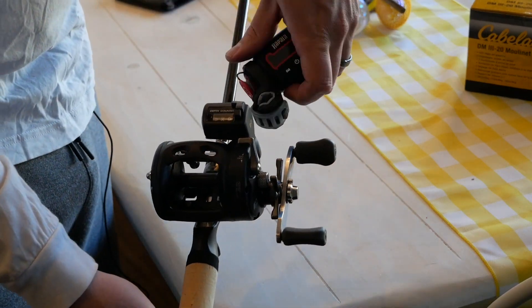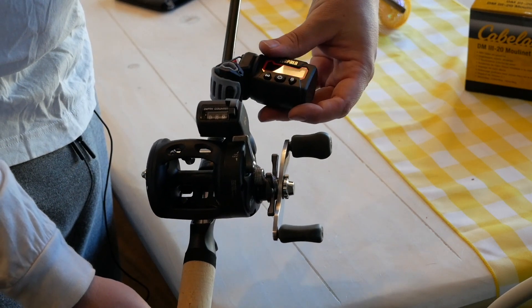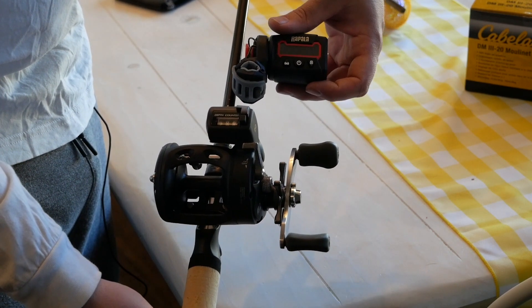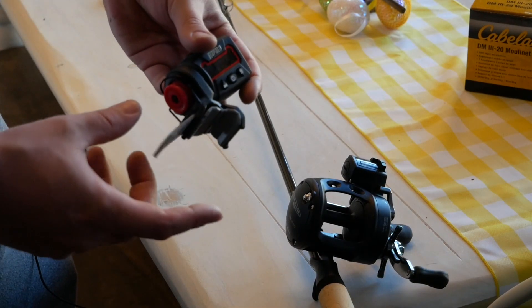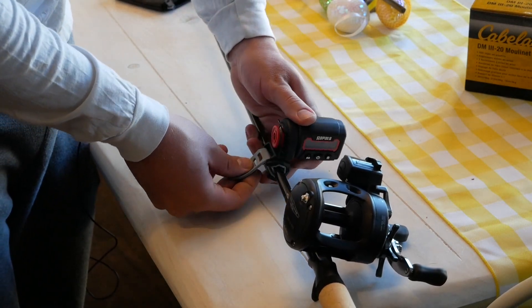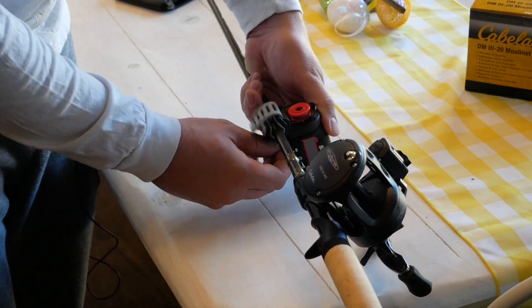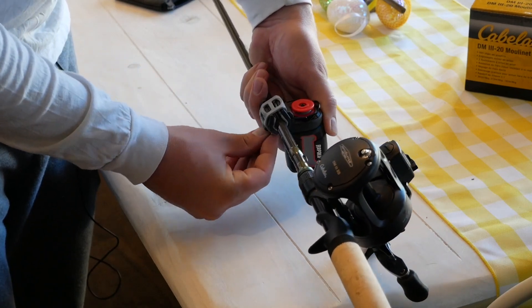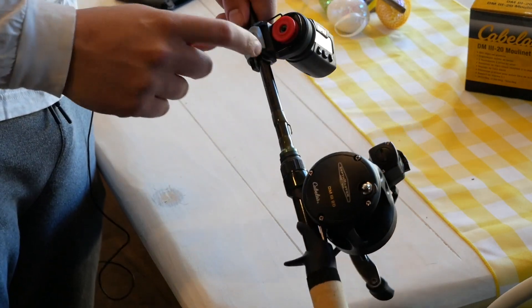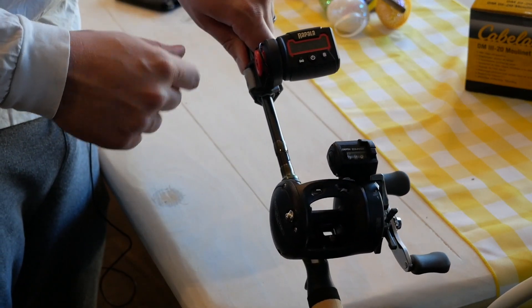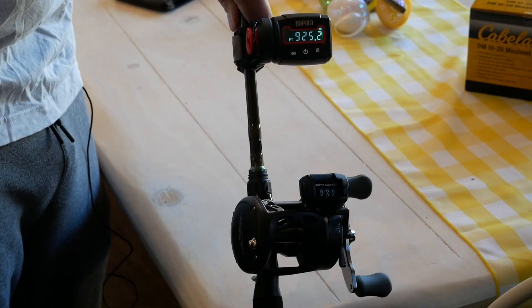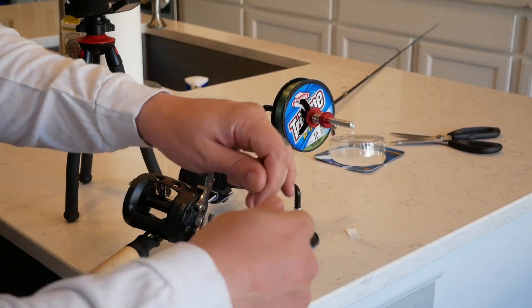And now what I want to do is I'm going to mount this Rapala line counter to the rod that I'm spooling up. So this little band on it makes it super easy to just clamp over. So we're just going to go ahead and do that. Just stretch it. Clamp it on there. And you want to have this little wheel facing up. So once that wheel is facing up you can go ahead and power on the unit and then you get your digital readout.